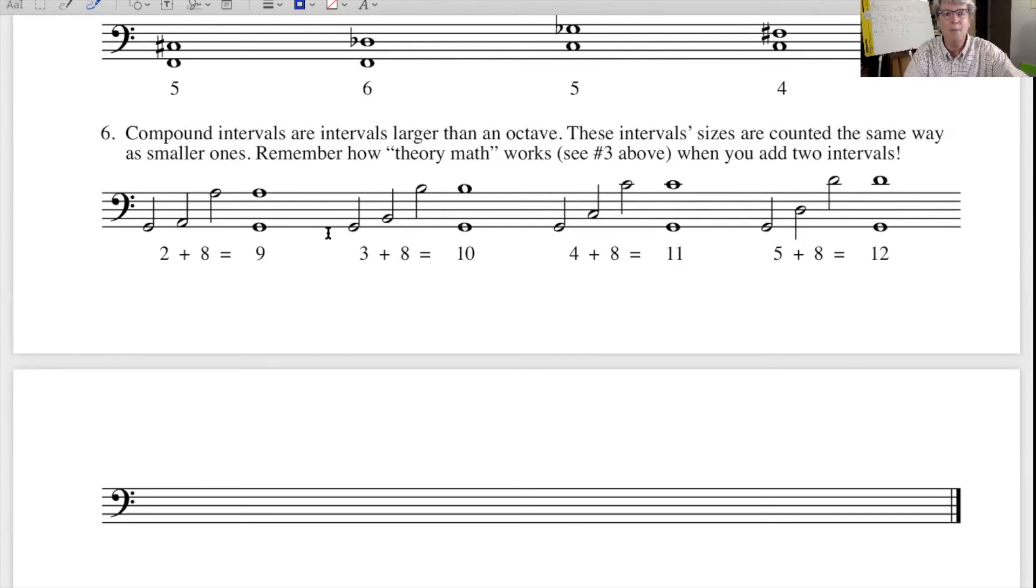We'll talk about this more when we talk about qualities of intervals. One more example. From C to G flat is a fifth. From C to F sharp is a fourth. One more piece of vocabulary. Compound intervals are intervals that are larger than an octave. These interval sizes are counted the same way as smaller ones, or you can figure it out using the kind of theory math that I showed you above on line three. So it's useful to think of compound intervals as being a smaller interval, what we call a simple interval, plus an octave. So if we take a second from G to A, and we add to it an octave from A to A, the second plus the octave adds up to not a tenth, but a ninth. And if you don't believe me, you can count this out and you'll understand that it is a ninth. A third plus an octave is a tenth. A fourth plus an octave is an eleventh. And a fifth G to D plus an octave from D to D is a twelfth.